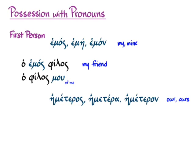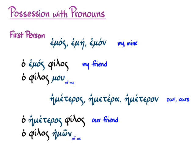In the plural, we can use the possessive adjective hemeteros, hemetera, hemeteron, which means 'our' or 'ours.' In attributive position, we get ho hemeteros philos, meaning 'our friend.' But again, you can use the genitive of the pronoun and get ho philos hemon — 'the friend of us,' or again, 'our friend.'